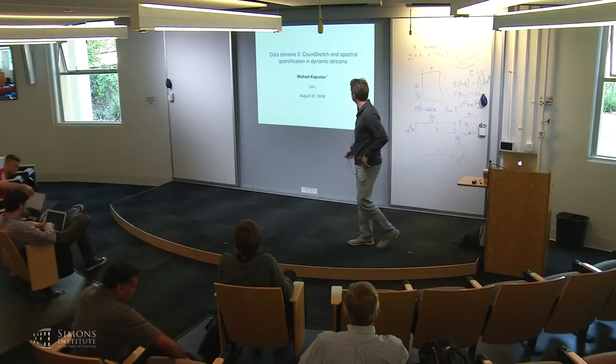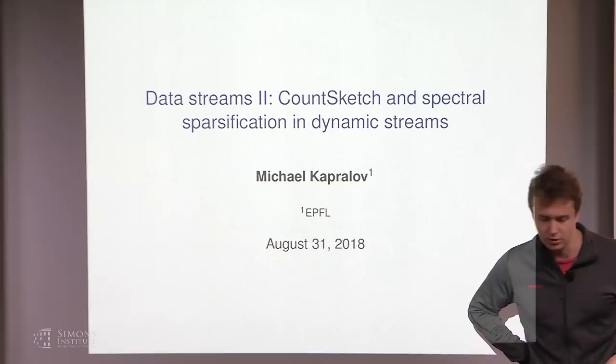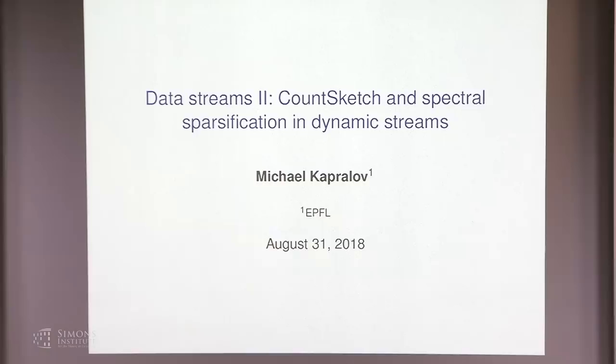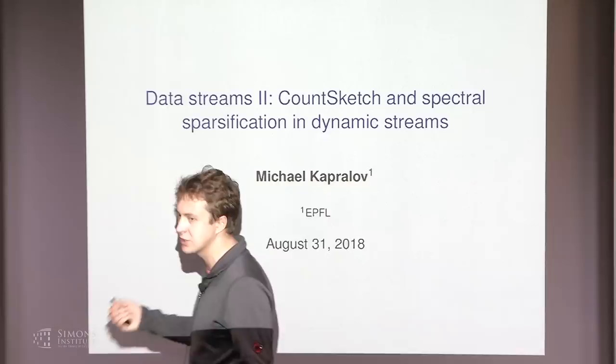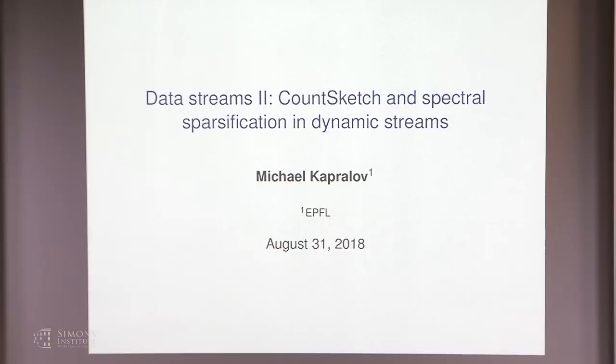In part two, I will talk about the CountSketch algorithm, which came up in David's talk where it was used for subspace embeddings. Here we will use it to first get some basic information about data streams, in particular to approximate the top k most frequent items in massive data streams. Once we have that classical application, we will design a spectral sparsification algorithm for graphs that operates through sketching and is applicable to dynamic streams.